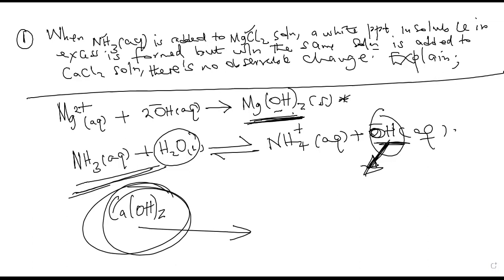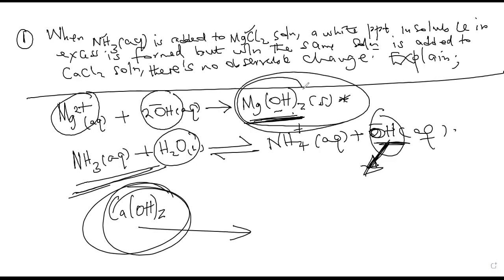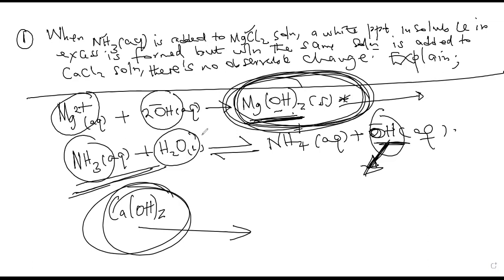Such questions come as analytical questions, but it's a matter of recognizing them. In summary: magnesium ions react with hydroxide ions from ammonia to form magnesium hydroxide as a precipitate; being basic it cannot react with excess alkali. For calcium, the ammonia ionizes to form only a few hydroxide ions, so the ionic product of calcium hydroxide stays below Ksp and no precipitation occurs — hence no observable change.